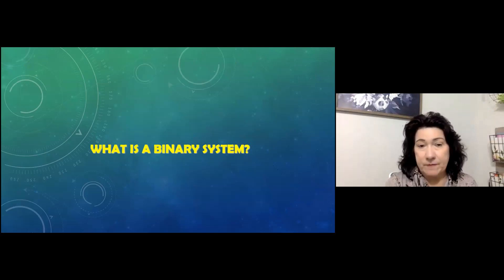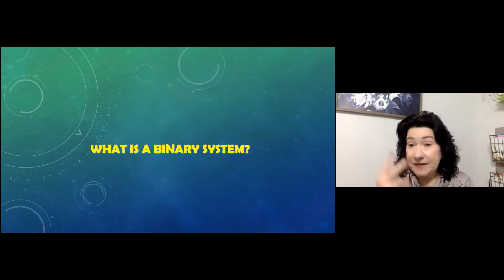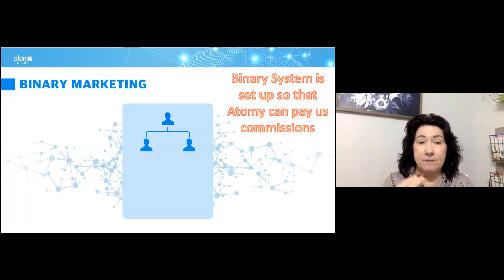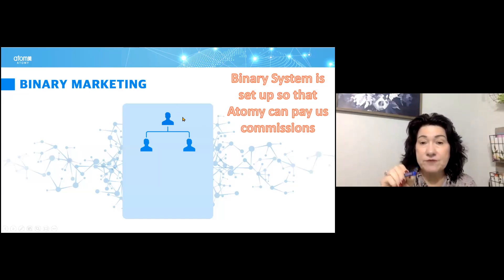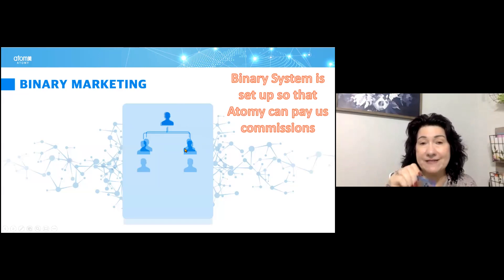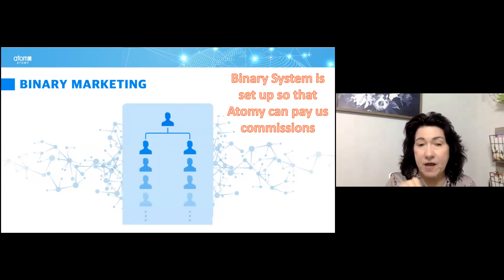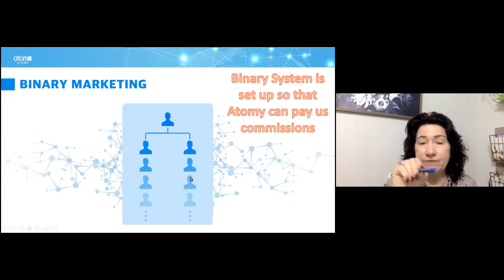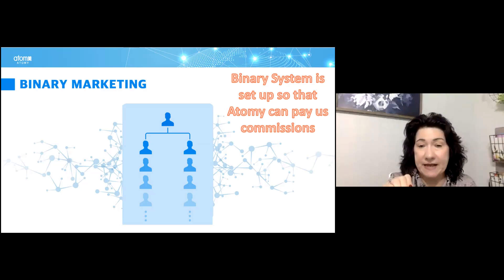The binary system — 'bi' means two. Our business is set up so that you're at the top, and anybody you sign up goes to your right or your left. That's how you earn commission: by continuing to sign people up on your left and right sides. As those people purchase, their PV floats up to you. Binary means two-sided.